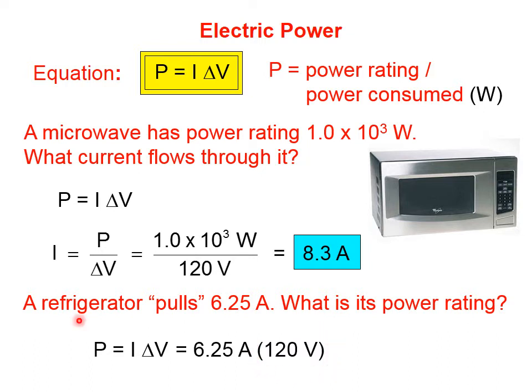Notice that in this problem, I worded it so it doesn't say a refrigerator pulls a current of 6.25 amps. I just said a refrigerator pulls 6.25 amps. I'm wanting you to have to think, to figure out what kind of quantity this is. When we look at the unit, amps, that's a hint that this is the current. The power rating on this refrigerator is 750 watts.